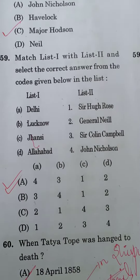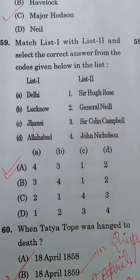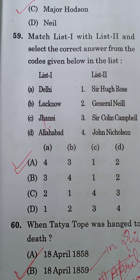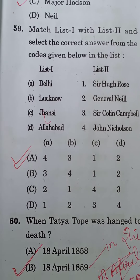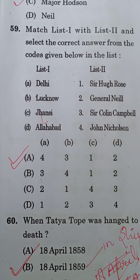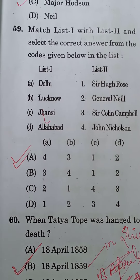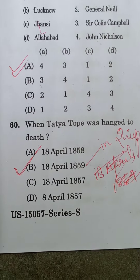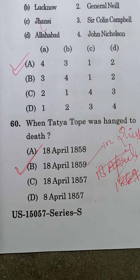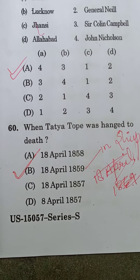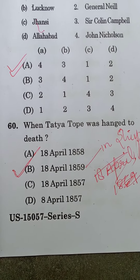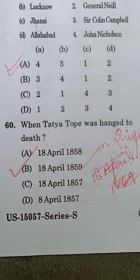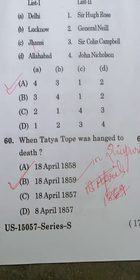The next very important question asks you to match the places with the uprisings. The correct option is 4-3-1-2, which is option A. The last question of this video: when was Tatia Tope hanged to death? Tatia Tope was hanged to death on 18th April 1859 in Shivpuri.